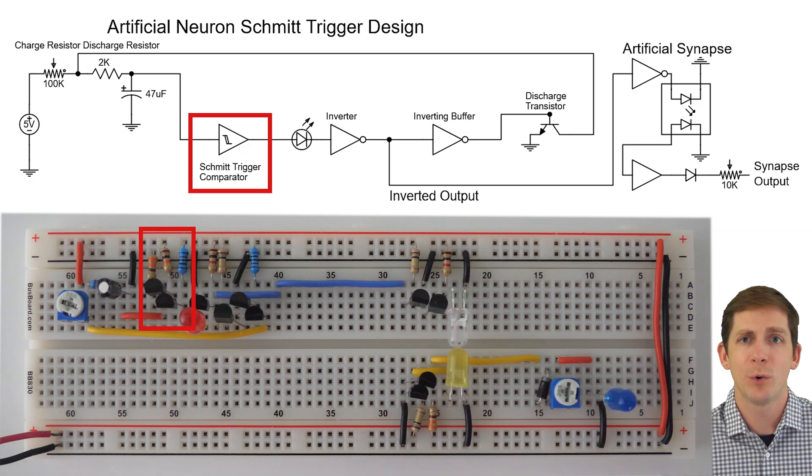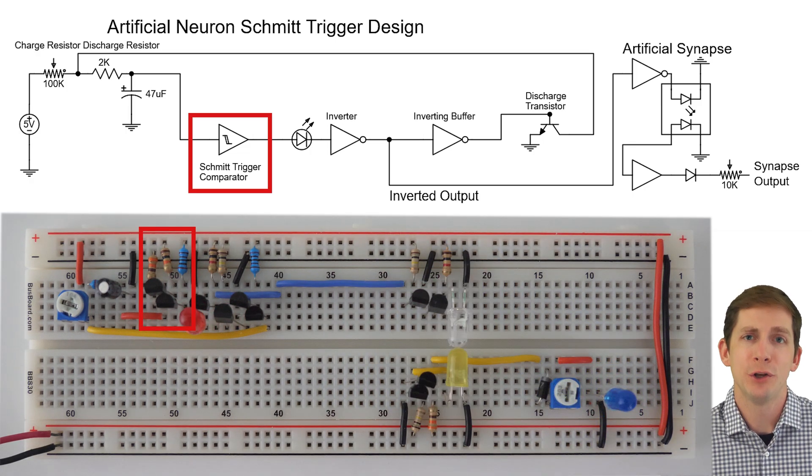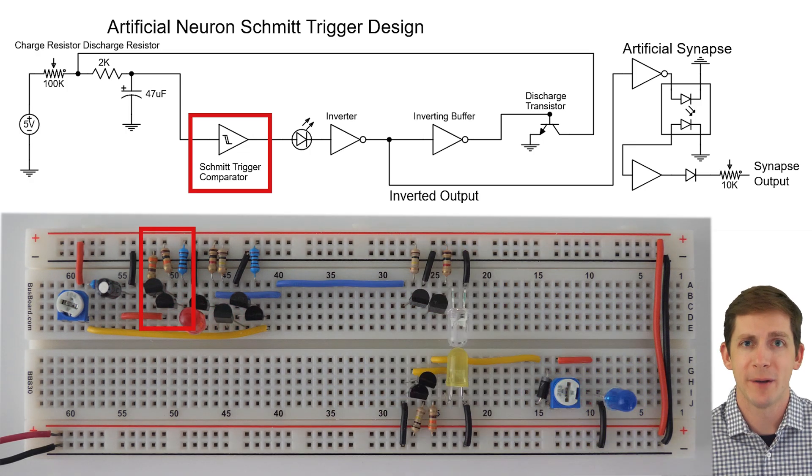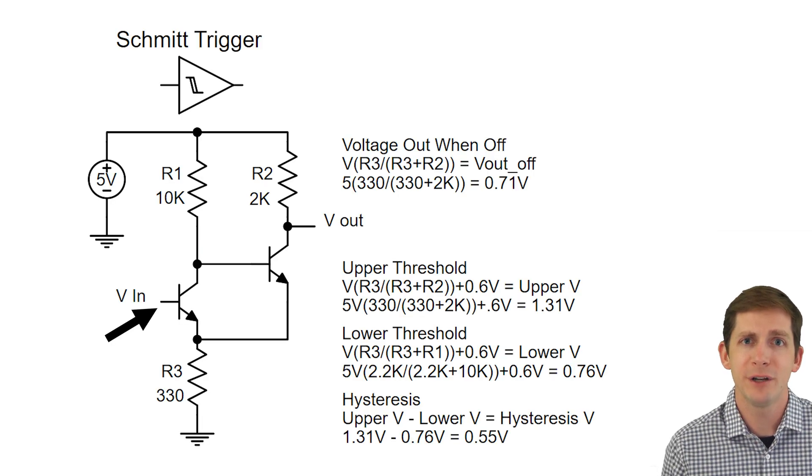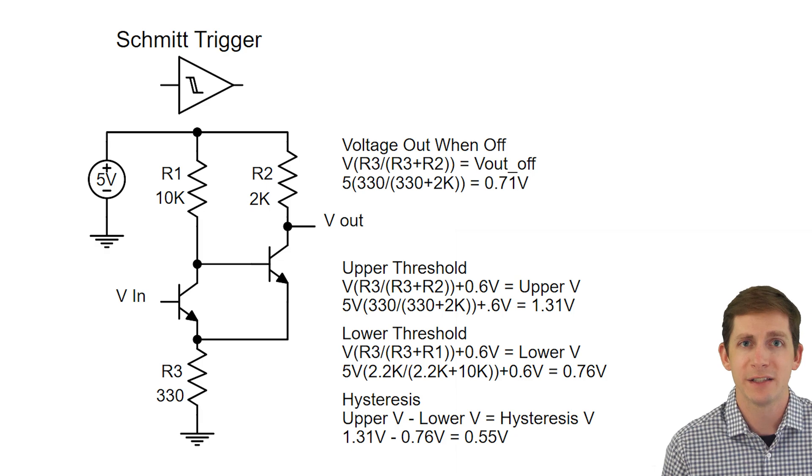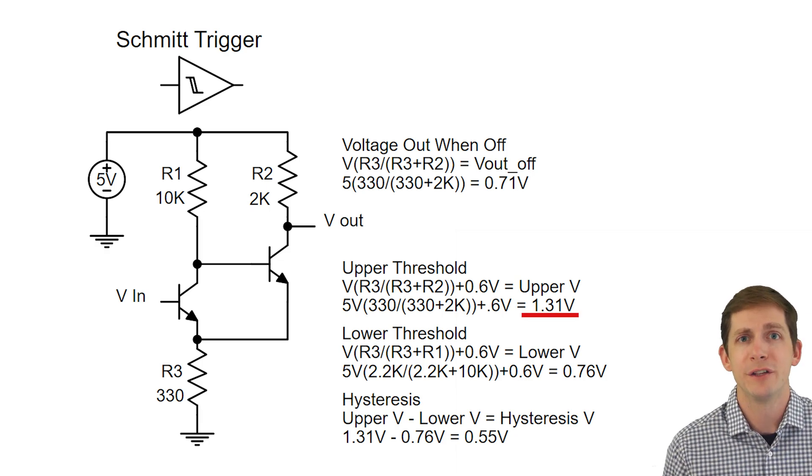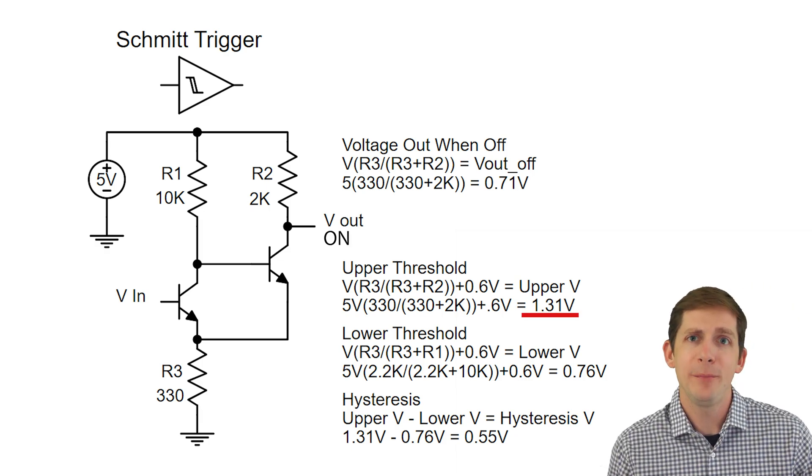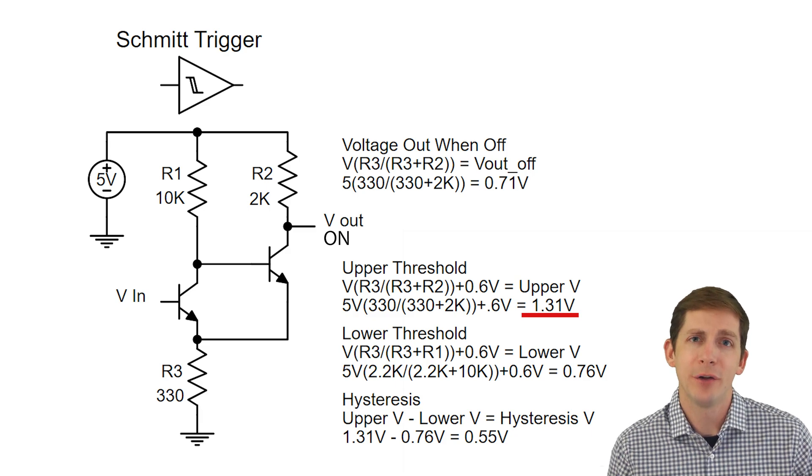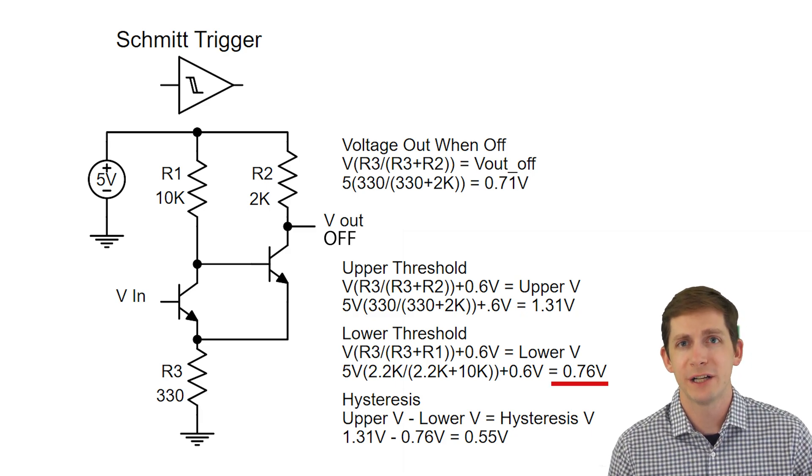Let's talk about how the Schmitt trigger works and then look at how it was used within the artificial neuron. The Schmitt trigger has a single input value. When the upper threshold is reached, in this case, at 1.13 volts, the circuit turns on. The output of the circuit stays on until the lower threshold is reached, in this case, 0.76 volts.